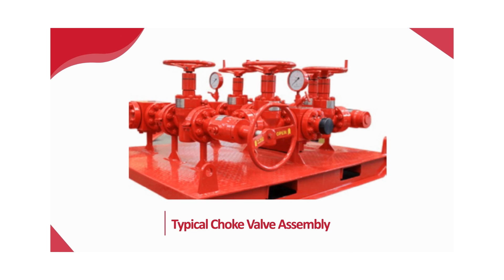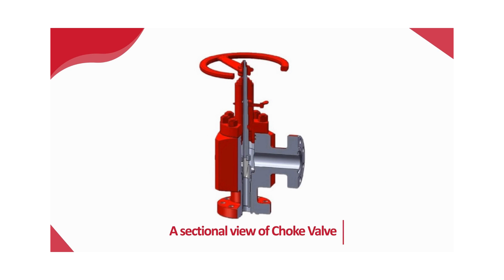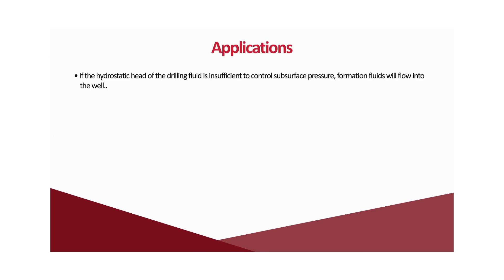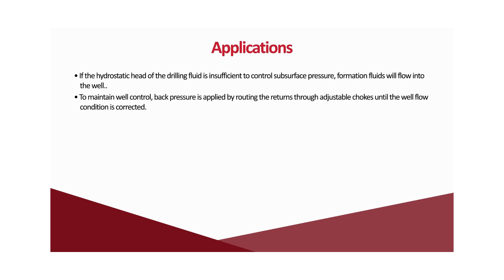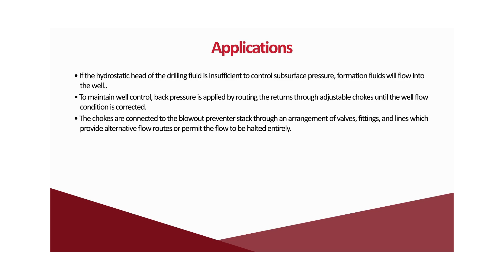Let us see a visual representation of a typical choke valve assembly. If the hydrostatic head of the drilling fluid is insufficient to control subsurface pressure, formation fluids will flow into the well. To maintain well control, back pressure is applied by routing returns through adjustable chokes until the well flow condition is corrected. The chokes are connected to the blowout preventer stack through an arrangement of valves, fittings, and lines which provide alternative flow routes or permit flow to be halted entirely. This equipment assemblage is designated the choke manifold.